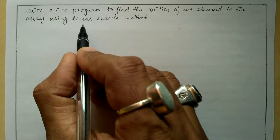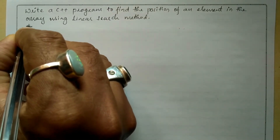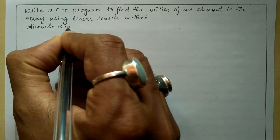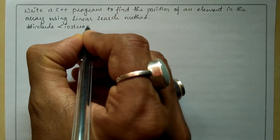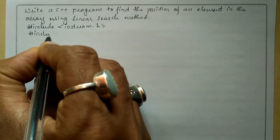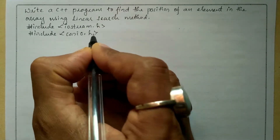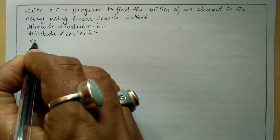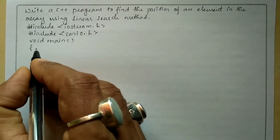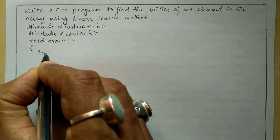From top to bottom, hence it is called linear search method. Let us write the preprocessor directives: hash include in angular braces we are going to write iostream.h header file, and the next preprocessor directive is hash include in angular braces we'll write conio.h header file. Now let us write void main function with curly open brace, and here in the declaration section we are going to declare all the variables.